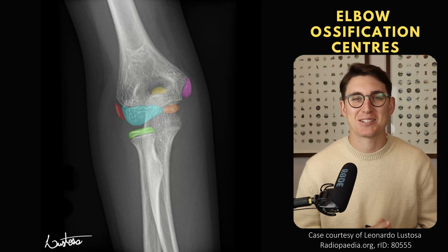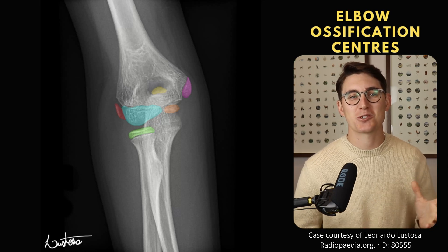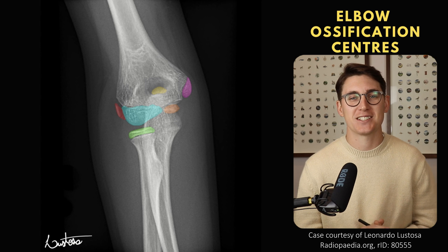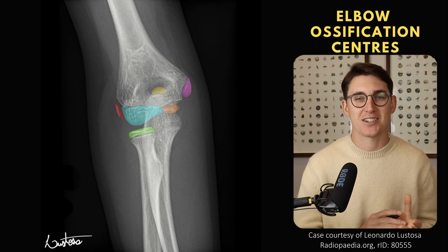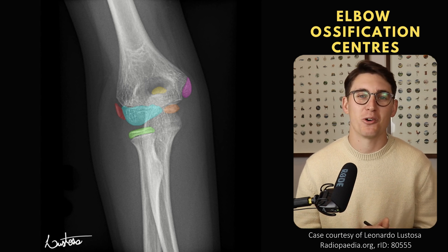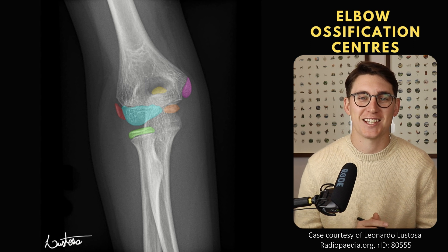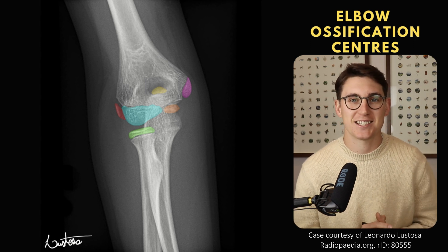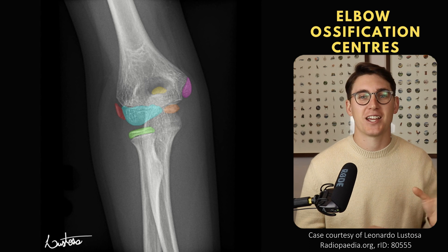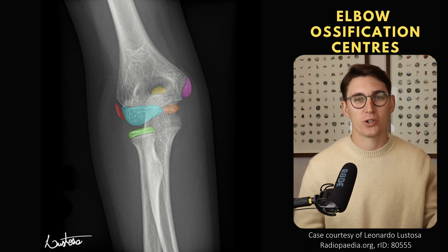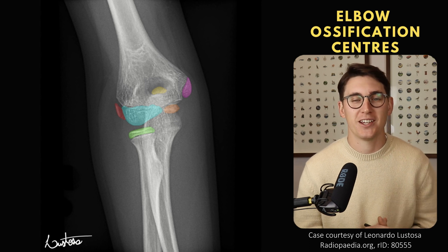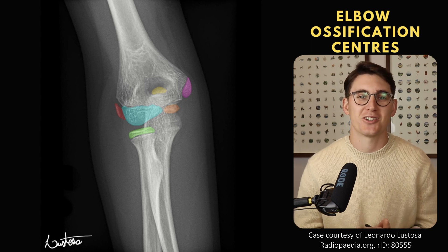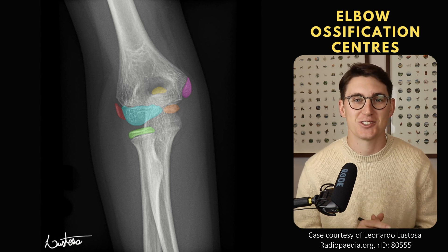Hello everybody and welcome back to another anatomy tutorial. Last week we looked at the anatomy of the elbow joint on x-rays and I mentioned in that video that we would have a separate video looking at the elbow ossification centers. So here's that video. I'm going to show you how to recognize the six different ossification centers, in which order they should appear in the normal development of a child, and at what age we should expect those different ossification centers to appear.